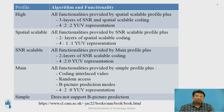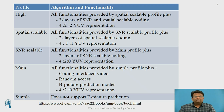The spatial scalable profile provides all functionalities of the SNR scalable profile, plus two layers of spatial scalable coding and 4:2:2 to 4:2:0 YUV representation. The SNR scalable profile consists of all functionalities plus two layers of SNR scalable coding and 4:2:0 YUV representation.